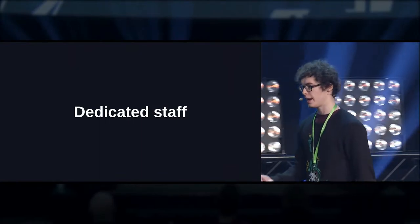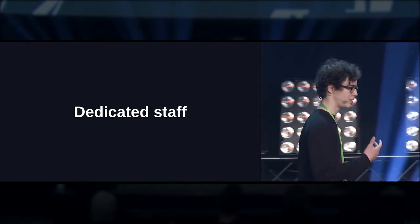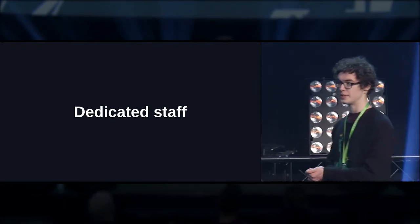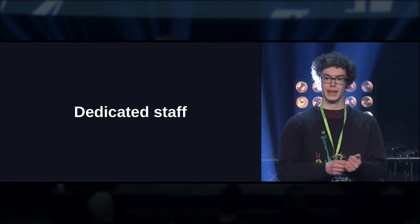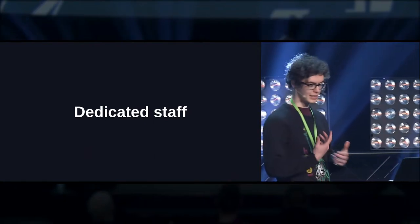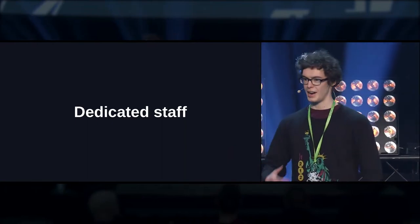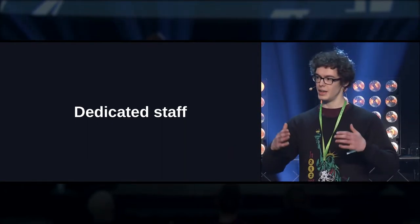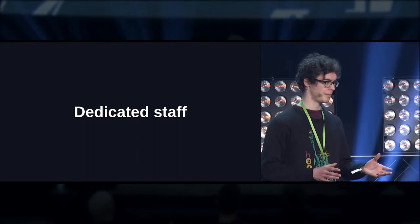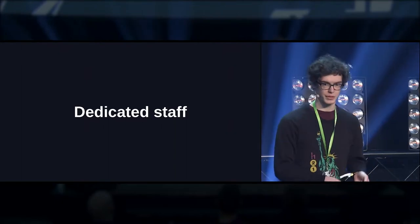On my next point about dedicated staff for a program — it seems obvious that you need the right amount of people and the right capabilities in order to manage your program. Something I've noticed that Google does in particular with their VRP is that they take it in turns when it comes to triaging. When they're receiving reports, it can often involve a lot of manual and repetitive work, and you can burn out eventually. So they assign reports to individuals each week, essentially taking turns. Not only having the right amount of people, but it's also important that you understand what they'll be capable of doing and that they don't burn out.